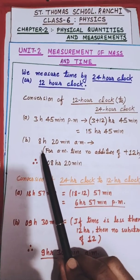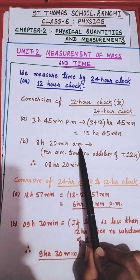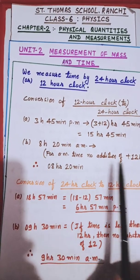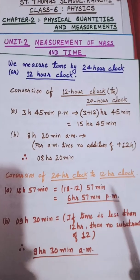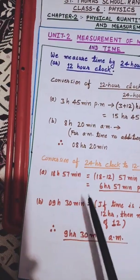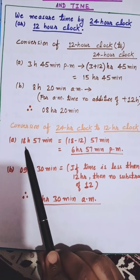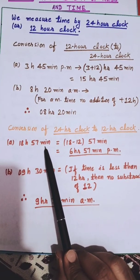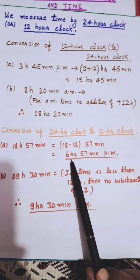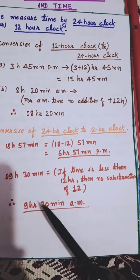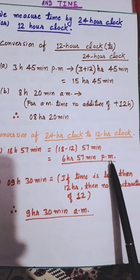Another example: 8 hours 20 minutes a.m. When the time is in a.m., we do not add 12; we simply write 08 hours 20 minutes. For converting 24-hour clock to 12-hour clock, take 18 hours 57 minutes. We subtract 12, giving us 6 hours 57 minutes. Since the original time is more than 12 (i.e., 13, 14, 15… 18), we add p.m. Remember: if the 24-hour clock time is more than 12, write it as p.m.